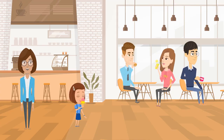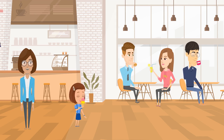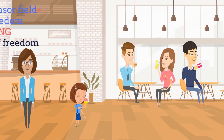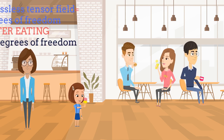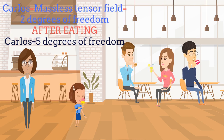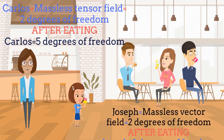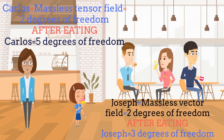Let's play to the fields. Carlos is a massless tensor field with 2 degrees of freedom before eating the hamburger. After eating it, he becomes massive with 5 degrees of freedom. Then the hamburger carries 3 Nambu-Goldstone bosons.